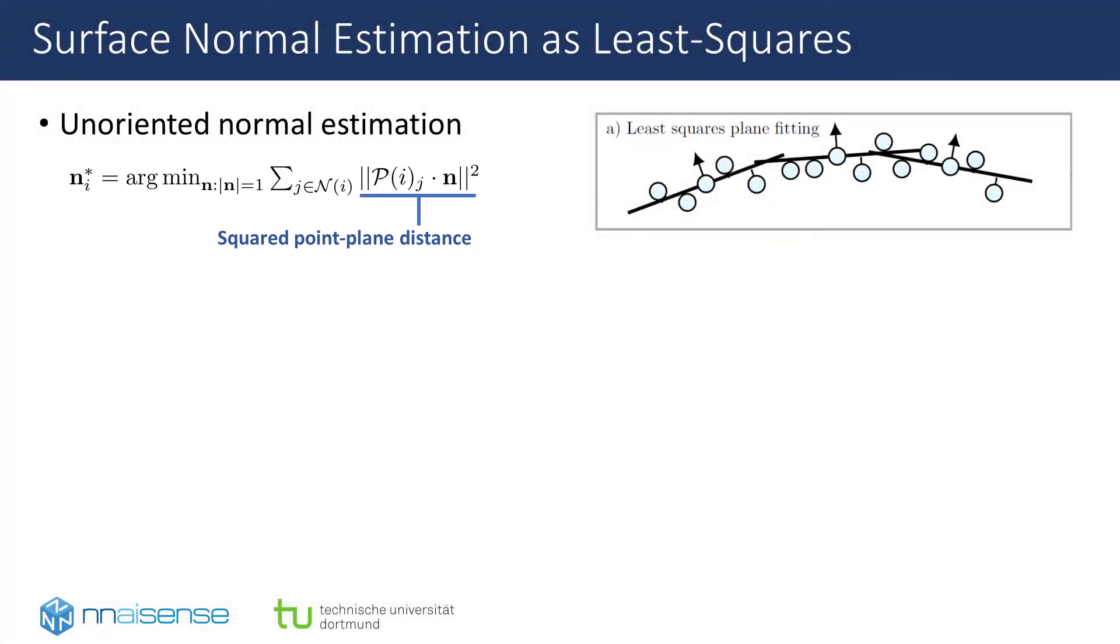However, in practice, this simple plane fitting approach has several downsides. It is not robust to outliers in the data, and it acts as a low-pass filter on the point cloud, leading to smooth normal vectors, eliminating sharper surface details.